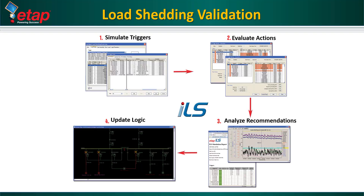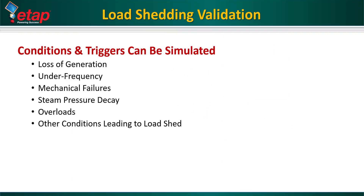ETAP ILS is a complete suite that allows the user to start from simulation to implementation. After configuring the ILS system, the user can proceed to simulate triggers in the ILS simulator — a duplicate of the real-time application with additional options including taking data from the load flow module and user-defined data. After evaluating the actions in the ILS trigger monitor, they can be analyzed dynamically using transient calculations. Once approved, the logic and priority tables can be updated to the real-time load shedding system.